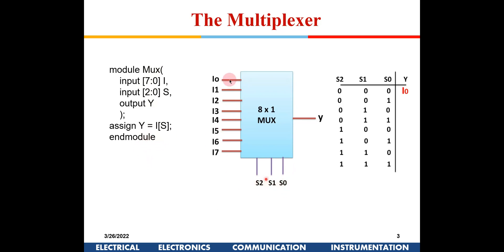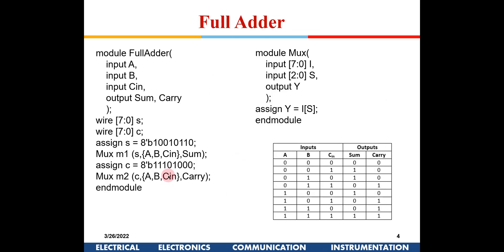This approach scales easily. For a 16-to-1 mux, I becomes I[15:0] and S becomes S[3:0] — four bits are required for the control signal. The rest of the code remains the same. This is a very short and effective code that can be used for designing any multiplexer.